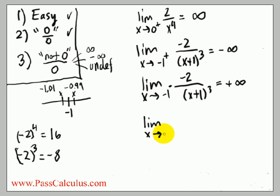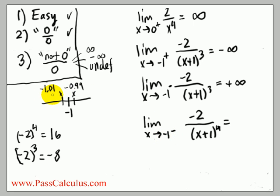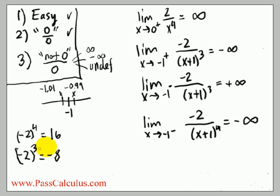What if we had the limit as x goes to minus one from the left of negative two over (x plus one) to the fourth? If I take negative 1.01 and add one I get negative 0.01, which is a small negative number. But when I raise this small negative number to the power of four it becomes a small positive number. So I have negative two divided by a small positive number, which is a big negative number. The answer is minus infinity.